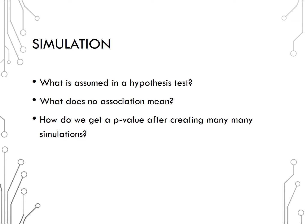How will we get a p-value after creating many simulations? The same as we always have. We will compare our observed statistic, the observed difference in proportions, to the simulated statistics or the simulated difference in proportion from many samples where we assumed no association. Our p-value is still the probability of seeing the observed sample data or something more extreme if the null hypothesis is true.